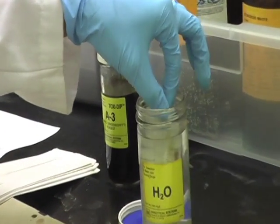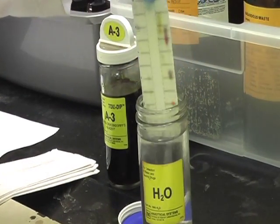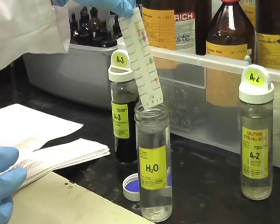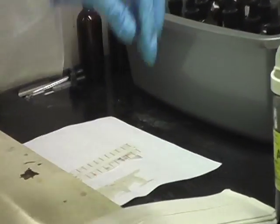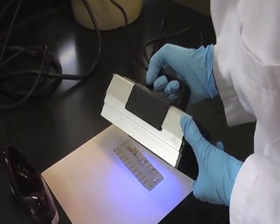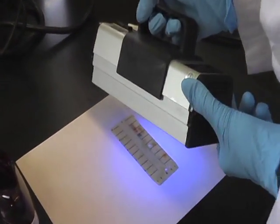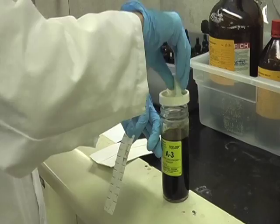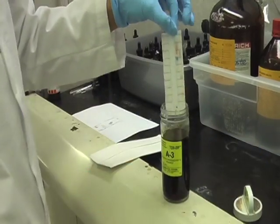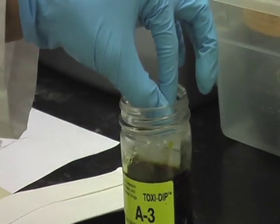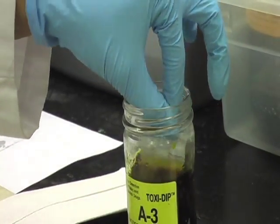Now dip the Toxigram into and out of water so that you can bring out the colors. Now view the Toxigram under a UV light to see if any of the compounds fluoresce. Next, you're going to dip the Toxigram into and out of the Toxijar A3 for approximately 10 seconds.